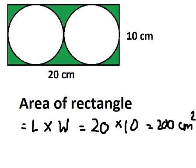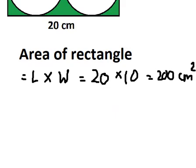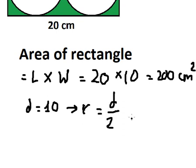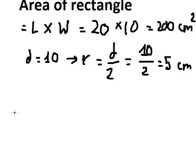We know that the diameter is the same as the width of the rectangle, so we have d equals 10. Now we need to find the radius, so that should be d divided by 2. We have 10 divided by 2, so we have 5.